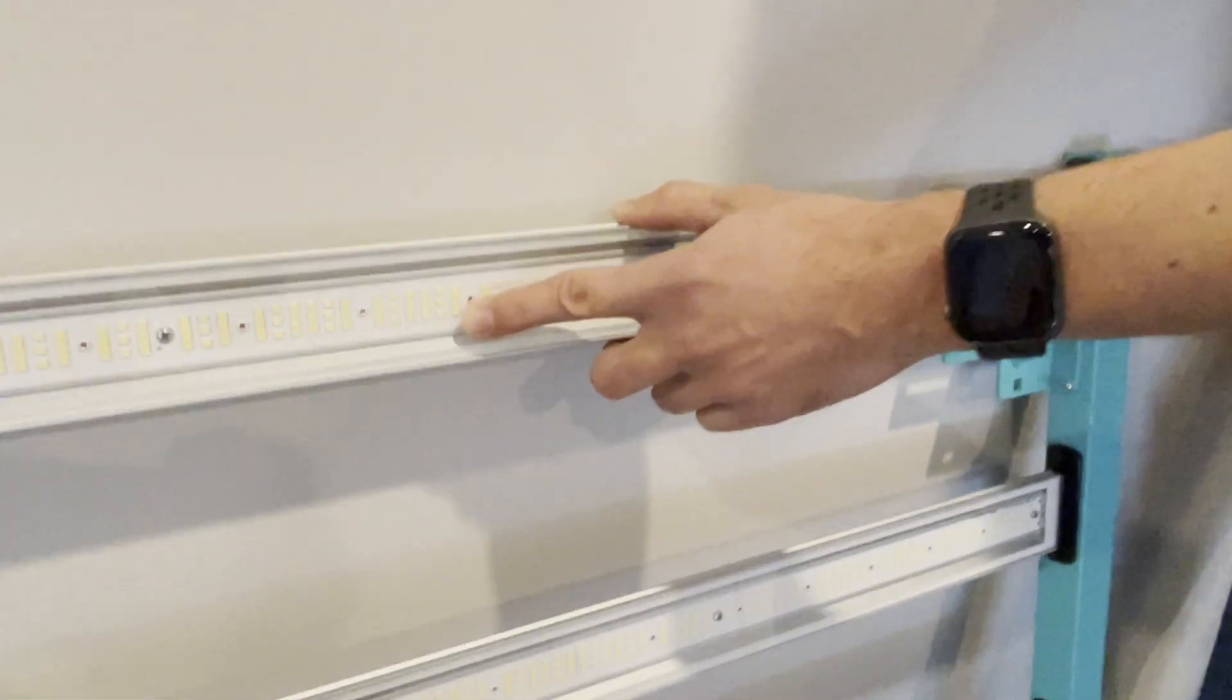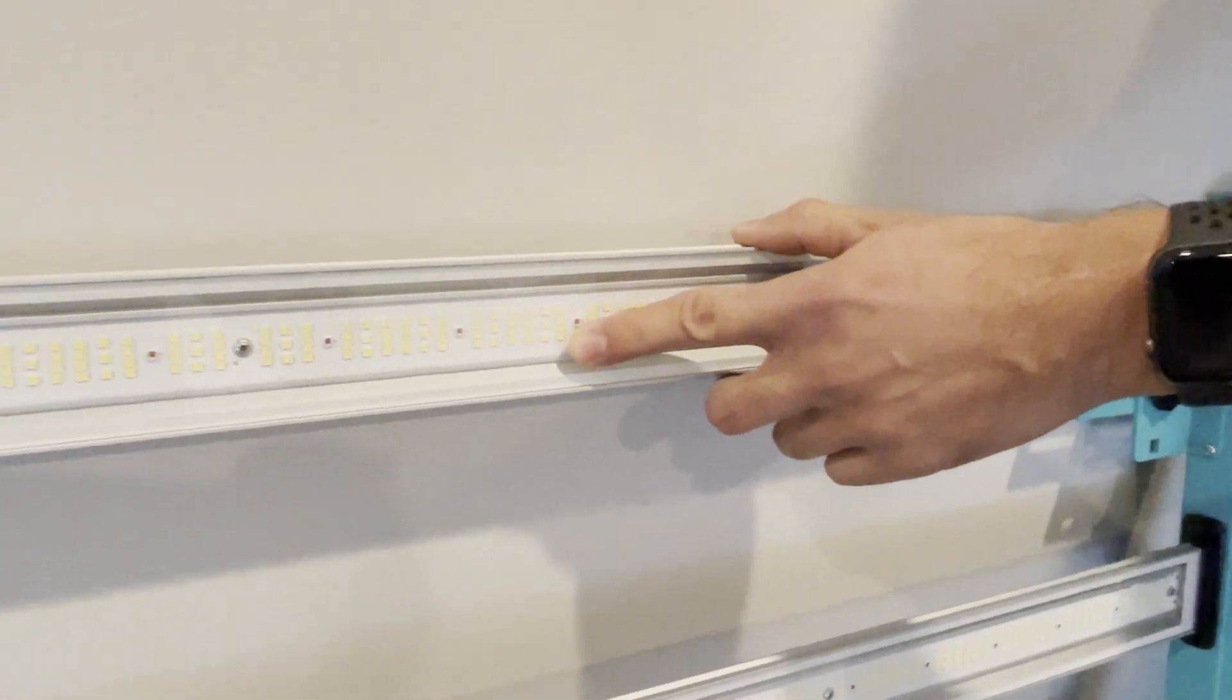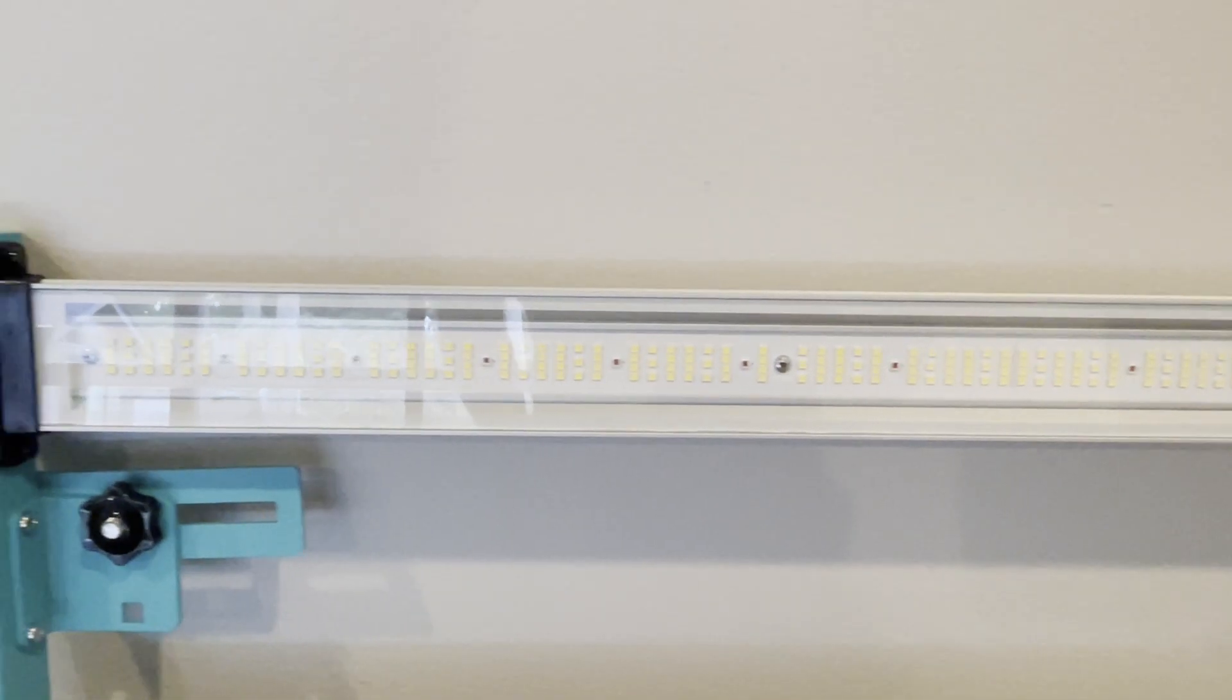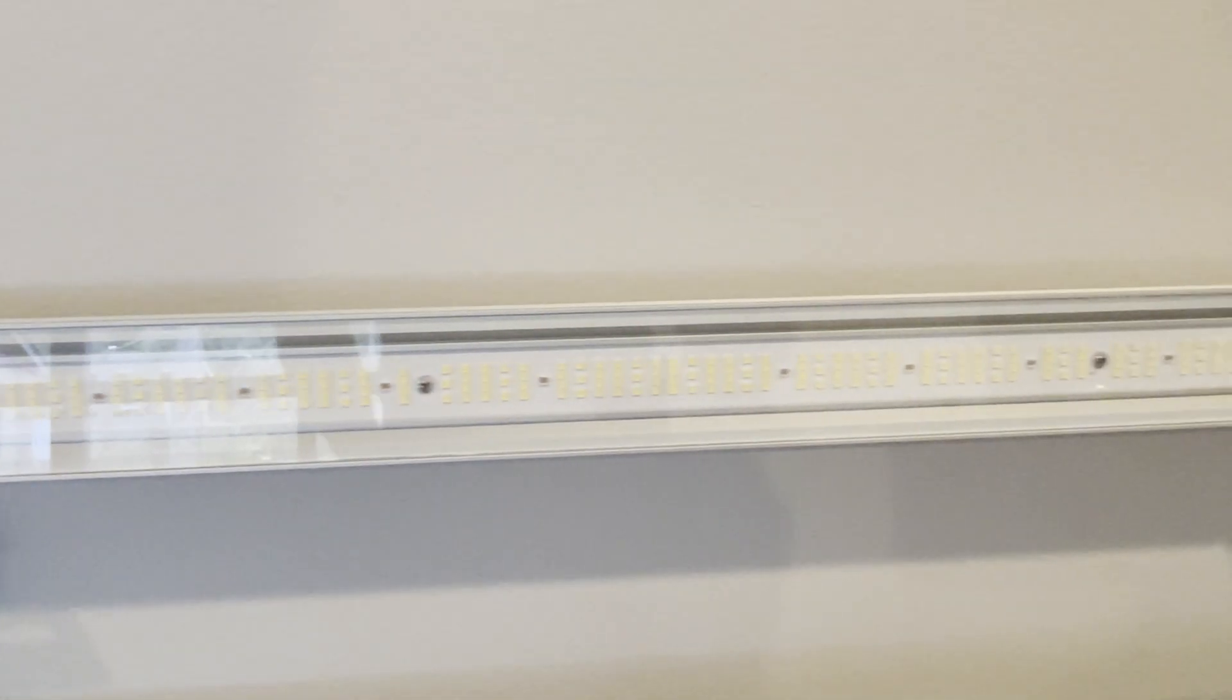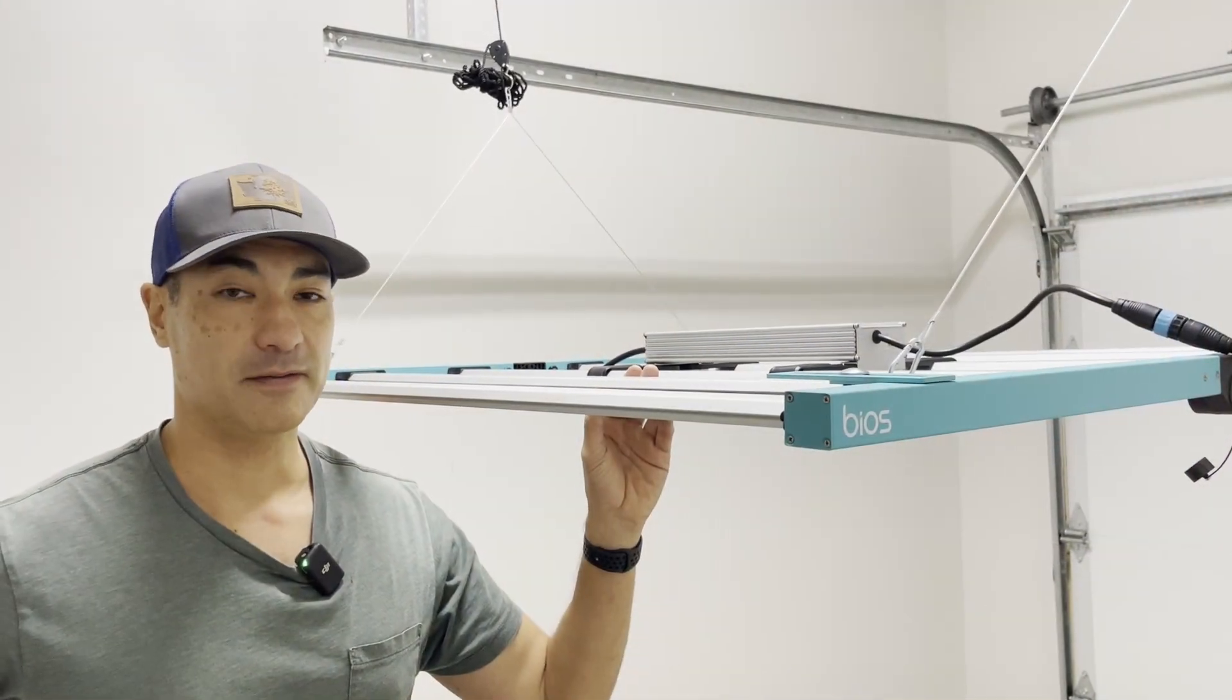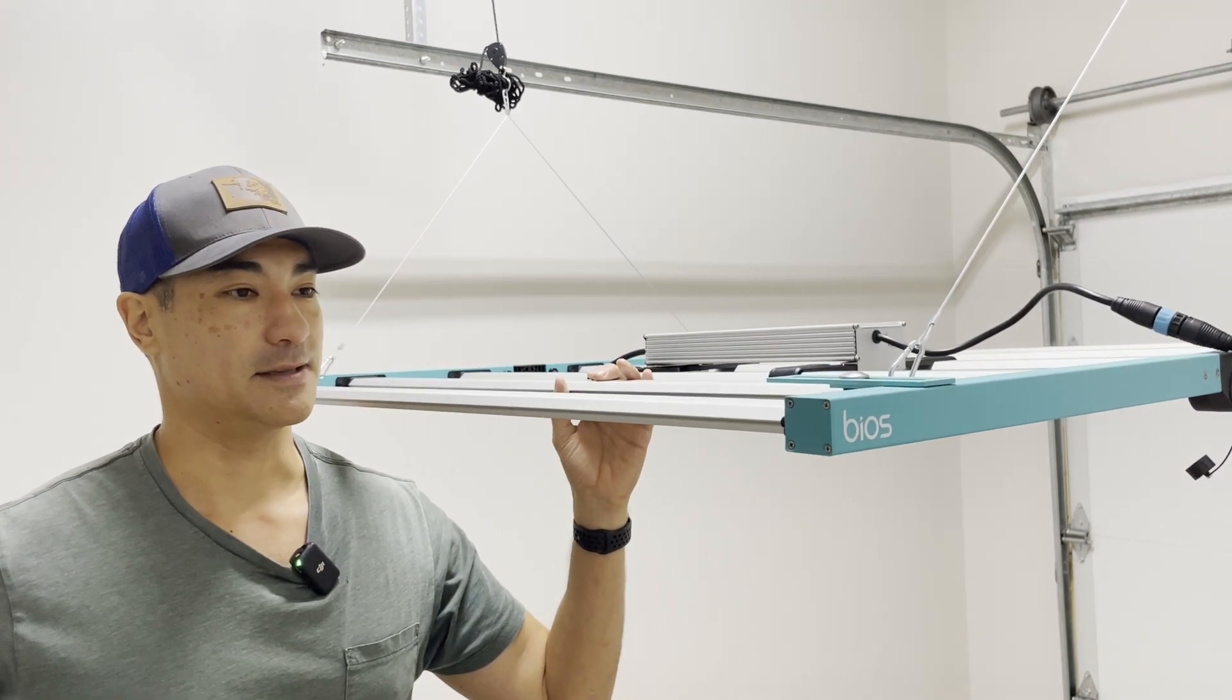I love the glass over the diodes, which makes them really easy to clean. It protects them from dust and overspray and will actually improve your efficiency over time because of the ability to clean the glass and keep this clean in your facility or in your grow room.